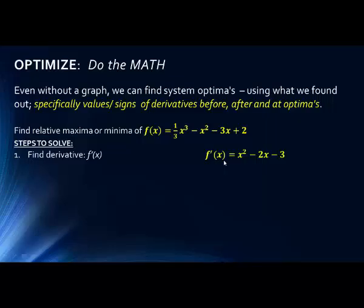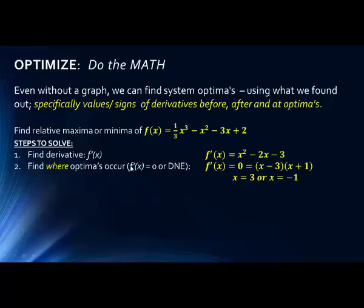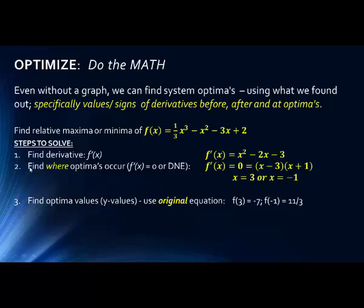We have a function asking us to find the relative maximum or minimum. The first thing is to find the derivative — a simple derivative using the power rule and the sum and difference rule. The derivative of f(x) = x² − 2x − 3 gives us f'(x). Next, we find where the optima occur: where f'(x) equals zero. We set the derivative equal to zero, factor the quadratic, and set each factor equal to zero. x − 3 = 0 gives x = 3; x + 1 = 0 gives x = −1.